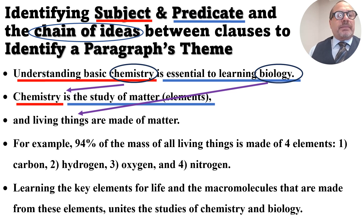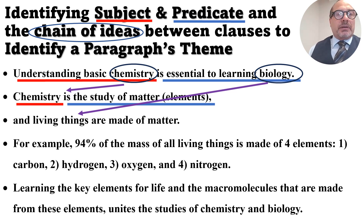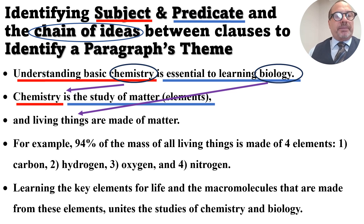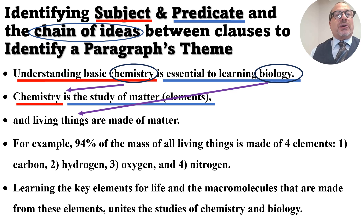The next sentence: subject is 'chemistry,' predicate is 'the study of matter, which are elements.' Notice how a piece of the subject in the first sentence is also the subject of the second sentence — that's an important thing to catch when you're skimming science writing. Notice that the term 'biology' from the predicate is brought down, and we can assume 'living things' is a synonym for biology since biology is the study of living things. These are important patterns of how scientists tie information together — that's why science writing is so dense. I'll ask you to underline subjects with red, predicates with blue, and find ideas that drop from sentence to sentence to create cohesion in the paragraph.